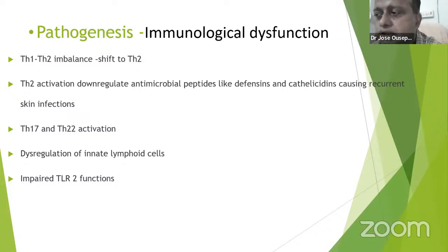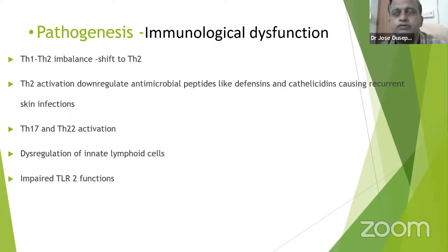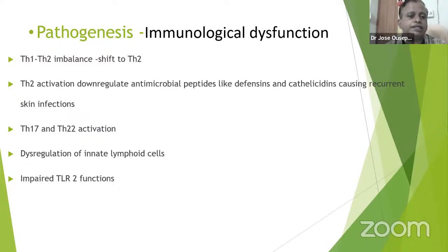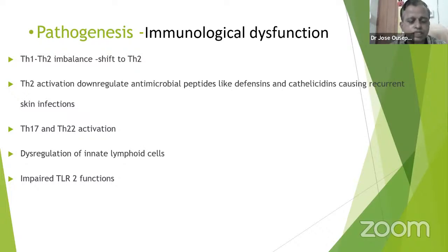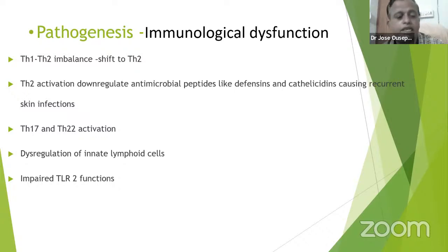There will be Th17 and Th2 activations occurring in the immunological dysfunction. There will also be dysregulation of innate immune cells and impaired TLR (Toll-like receptor) functions happening with the immunological dysfunction in Atopic Dermatitis.